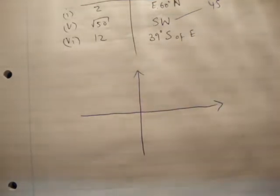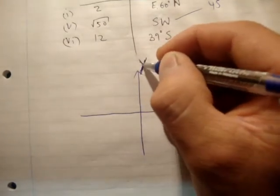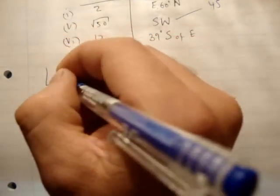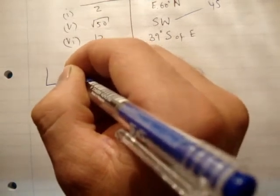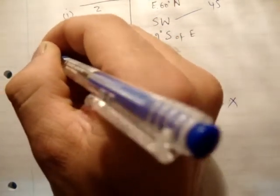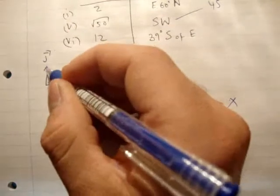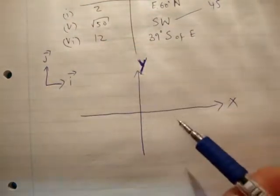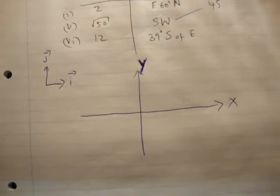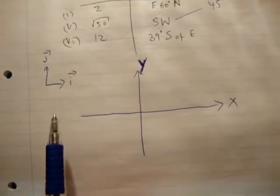First of all, we draw our x and y axis, or x and y plane, otherwise known as your Cartesian plane. We draw our unit vectors, i-hat and j-hat. Now, remember why we use i and j as well as x and y, so that when we look at a particular number, we're able to work out what dimension or axis it's working in.